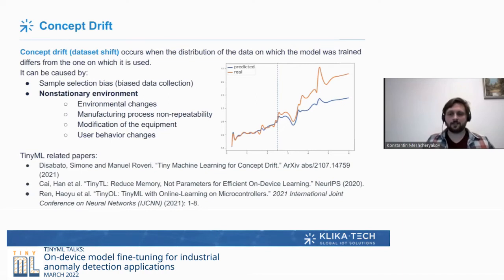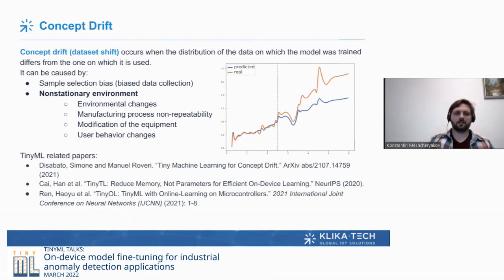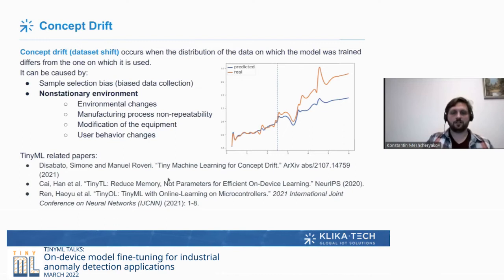There are different approaches to handle this. In the cloud, you can collect data continuously and deploy new models via OTA. You can also use on-device model fine-tuning or federated learning. There are not many papers on this type of on-device fine-tuning. Notable ones include 'Tiny Machine Learning for Concept Drift' by Disabato and Roveri, 'TinyTL: Reduced Memory, Not Parameters for Efficient On-Device Learning' published on arXiv, and 'TinyOL: TinyML with Online Learning for On-Microcontroller' by Ren and Hao.